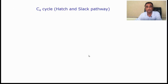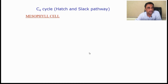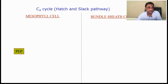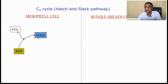This is what we call the Hatch and Slack cycle. There are two compartments: the mesophyll and the bundle sheath cell. In the mesophyll, the first CO2 acceptor is PEP — different from the C3 cycle where it was the 5-carbon compound RuBP. Here, phosphoenolpyruvate, a 3-carbon compound, acts as the CO2 acceptor. It accepts CO2 and as a result, oxaloacetic acid is formed — a 4-carbon compound. This is the first stable product, which is why the entire cycle is called the C4 cycle.